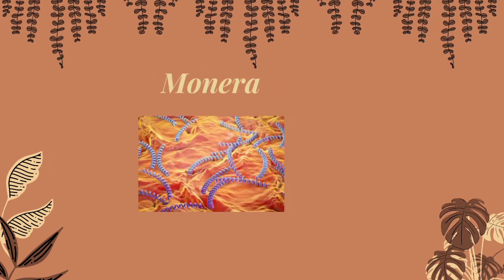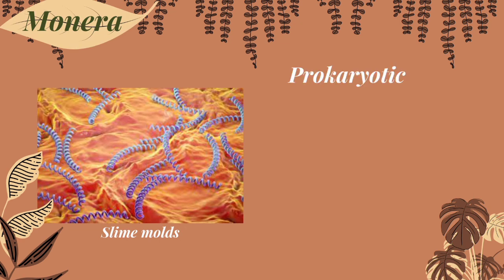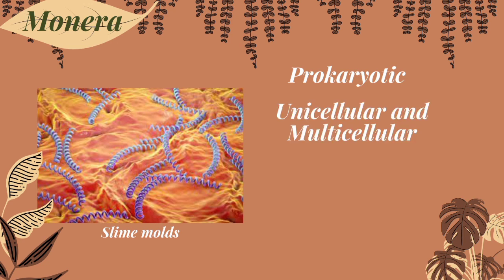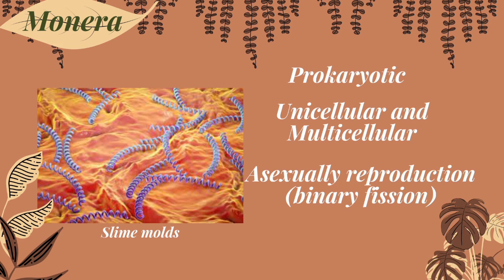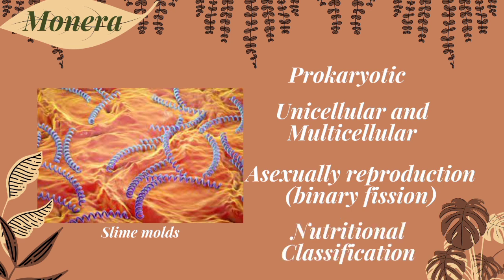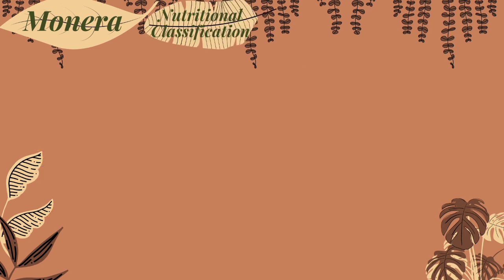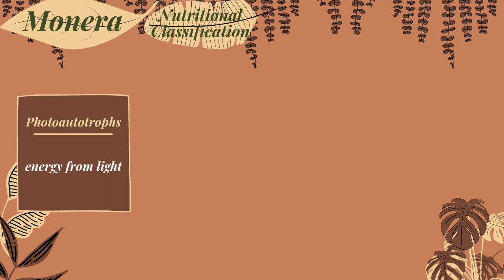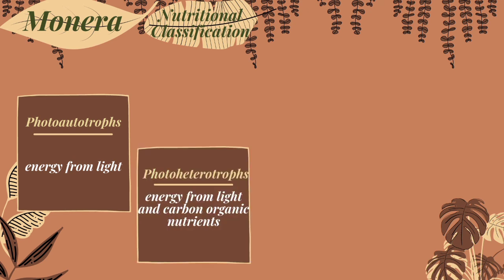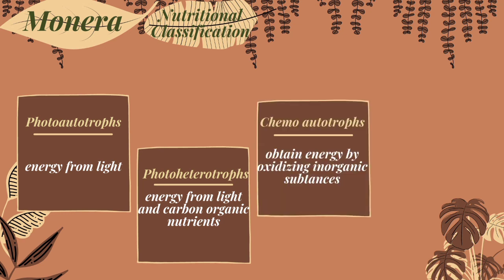The last kingdom is kingdom Monera, or prokaryotes, which means they are prokaryotic. Unlike other organisms, they exist as single-celled. But there are a few species in kingdom Monera that may form aggregates of cells that stick together after dividing, making a simple multicellular form. They reproduce asexually by binary fission and grow 1 to 10 micrometers in diameter — one tenth the size of a eukaryotic cell. There are four ways kingdom Monera gain nutrition. The photo-autotrophs gain energy from light. Photo-heterotrophs gain energy from light and carbon from organic nutrients.